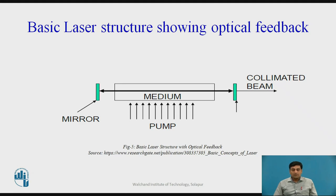Hence, the optical signal is fed back many times while receiving amplification as it passes through the medium. The structure acts as a Fabry-Perot resonator. Although the amplification of the signal from a single pass through the medium is quite small, after multiple passes the net gain can be large and lasing takes place.